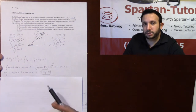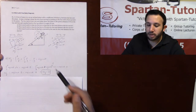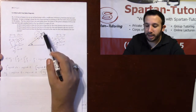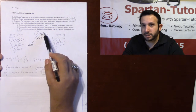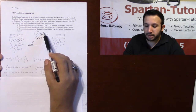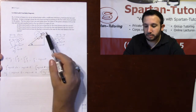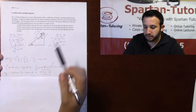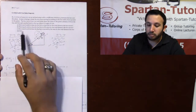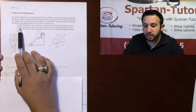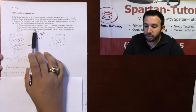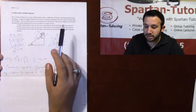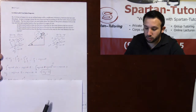The reason the work done by gravity is zero is because I start and end at the same position — my change in height is zero in the end. Now let's take a look at Part B: how much work is done by the force of friction for the total distance the box moves?